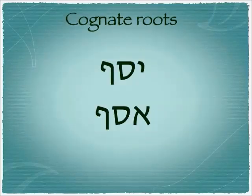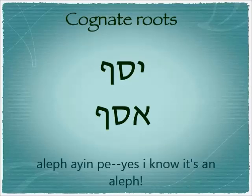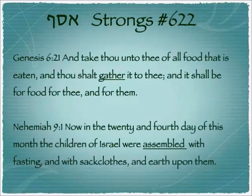In the past we have talked a great deal about cognate roots — roots related by the linguistic rules of sound shift. The cognate root of Yisaf — Yud, Samech, Peh — is Asaf — Ayin, Samech, Peh — Strong's number 622.